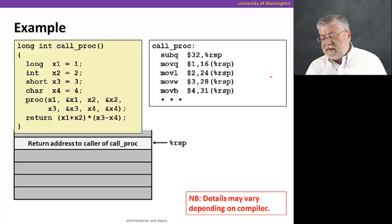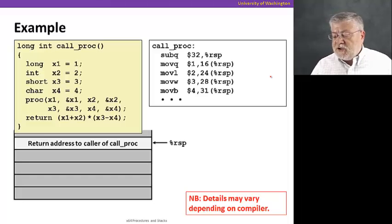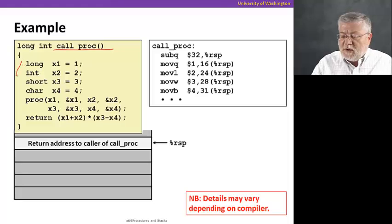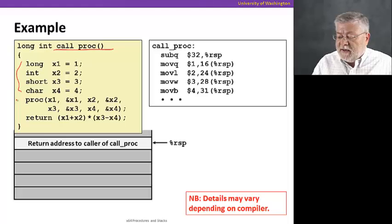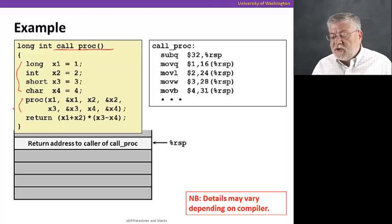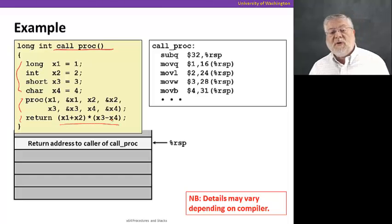Let's take a look at an example that illustrates this. We're gonna have this function called call proc, which has some four local variables of different sizes. And then does a call to another procedure called proc, and then finally returns a value that it computes according to this expression.